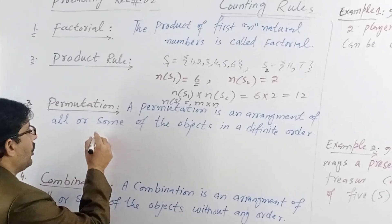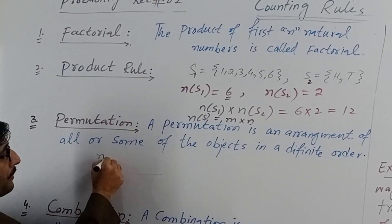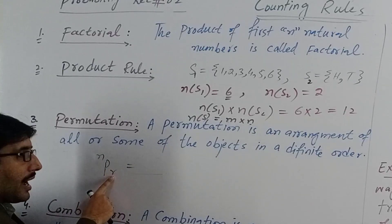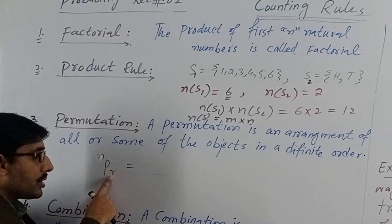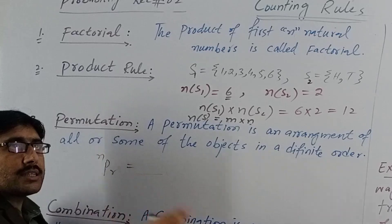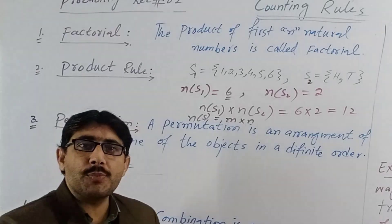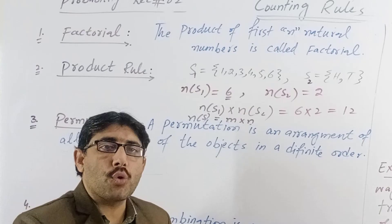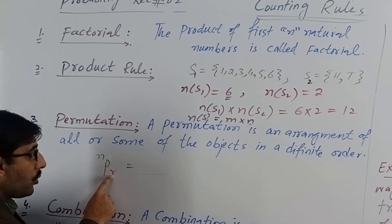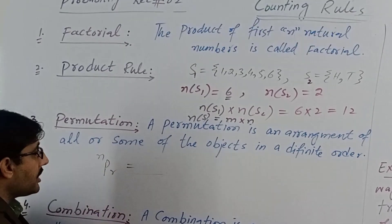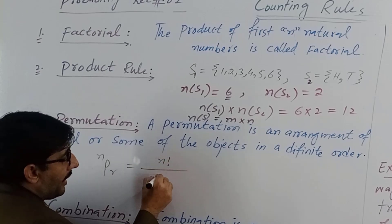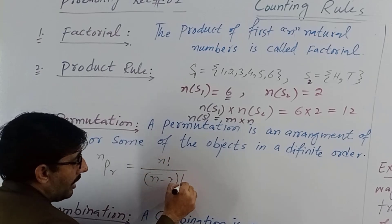The mathematical formula for permutation is nPr, where n is the total number of objects and r is the number of objects you want to arrange out of n. For example, if I have 10 objects and want to arrange 5, then n equals 10 and r equals 5. The formula is: nPr equals n factorial divided by (n minus r) factorial.